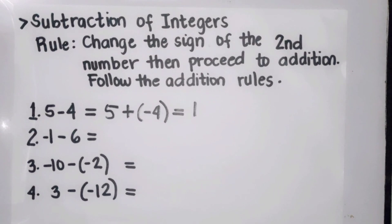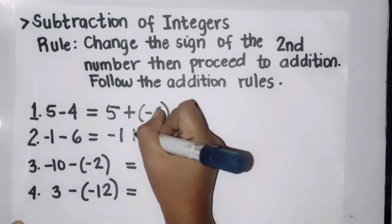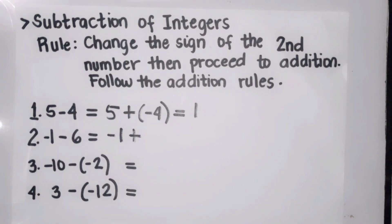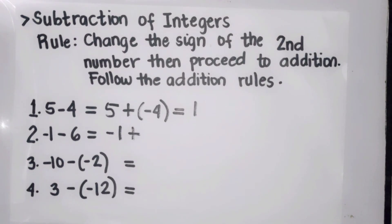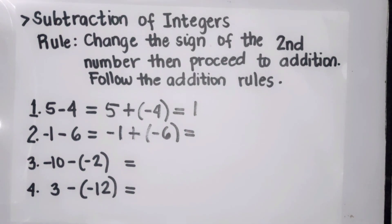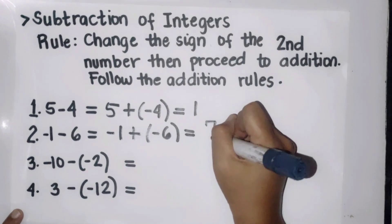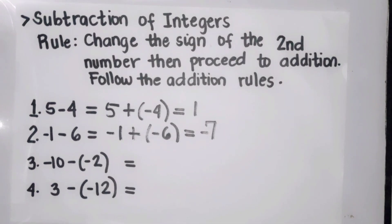Second example: negative one minus six. Copy the first number, change to addition, and change the sign of the second number — positive six becomes negative six. Now we have negative one plus negative six. Since they have the same signs, proceed to addition: one plus six is seven. Since their signs are both negative, we copy it. Therefore the answer is negative seven.